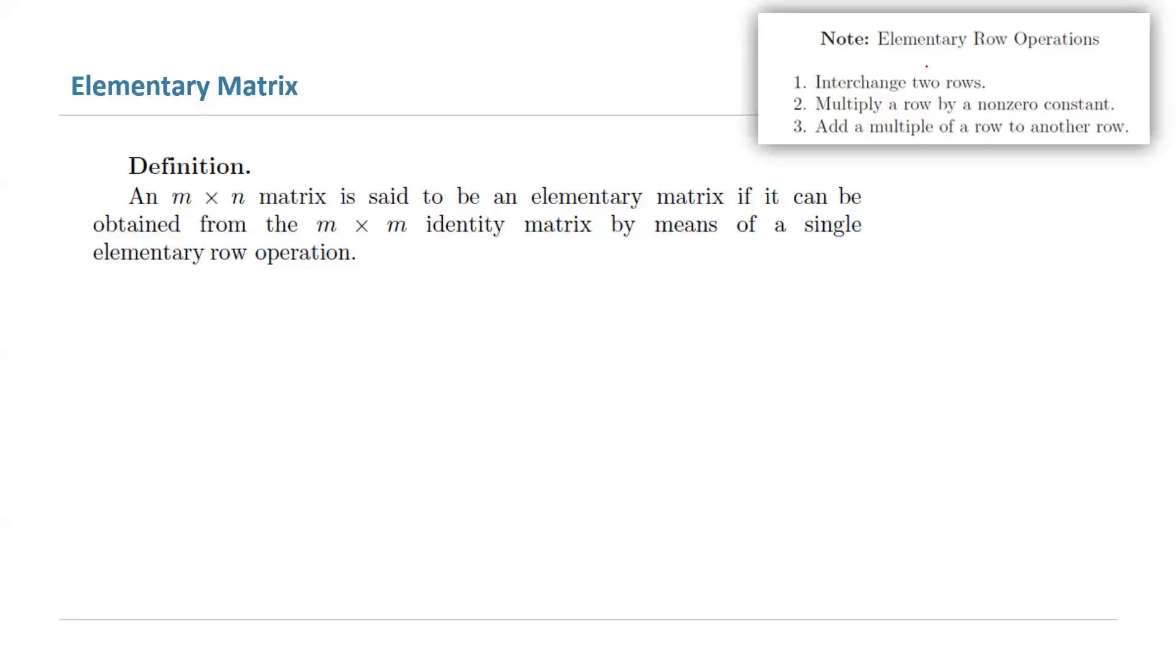Remember we introduced elementary row operations: interchanging two rows, multiplying a row by a non-zero constant, and adding a multiple of a row to another row. We are ready to define elementary matrices.